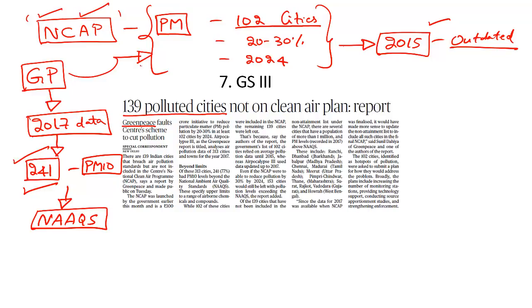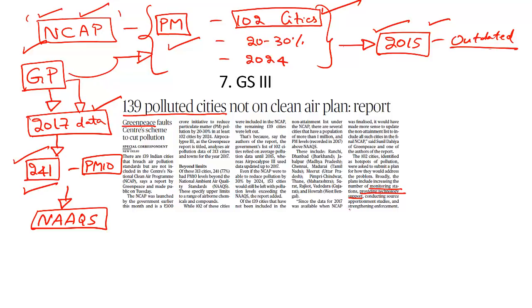Greenpeace has suggested the government rely on the latest 2017 data instead of the outdated 2015 data. Under the new program, the government is developing a customized approach to target PM pollution in these 102 cities, mainly focusing on increasing monitoring stations, providing better technology support, and strengthening enforcement to contain air pollution.